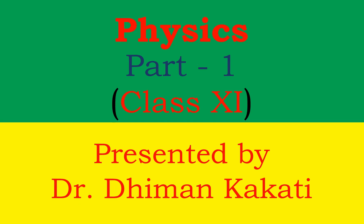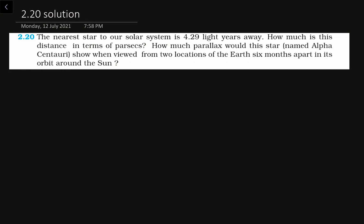Hello everyone, this is Dr. Dhiman and I welcome you all to this physics tutorial series in Class 11 Physics. I am solving the problems from the NCERT textbook. In this video we will solve problem number 2.20 from chapter number 2. In this problem we have the nearest star in our solar system is 4.29 light years away — how much is this distance in terms of parsecs? So first of all we have to convert this light years unit into meters and then we will convert into parsecs.